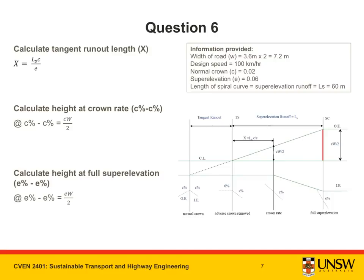Let's use our known relationships to calculate lengths. x is the tangent runout length, equal to ls times c over e, where ls is the length of the spiral curve. So x equals 60 times 0.02 over 0.06, putting this into the calculator gives us x equals 20 meters.